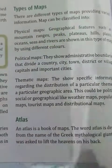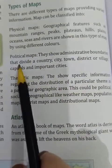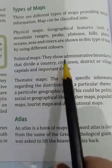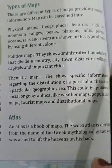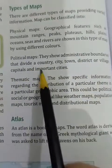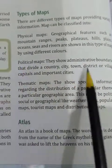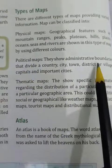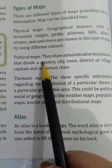Physical maps show natural things. Political maps show administrative boundaries that divide the country into cities, towns, districts, and villages, including capitals and important cities. These are the boundaries that show the political divisions.